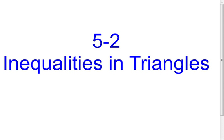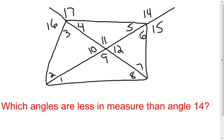We're going to look at a few examples dealing with inequalities in triangles. In this first one, I want to find all the angles that have a measure less than the measure of angle 14. Angle 14 is identified up here. I want to find all the angles that are smaller than this one, or that I know have to be smaller. Remember, we can't go by what it looks like — we've got to go by given information, and specifically the exterior angle inequality theorem.